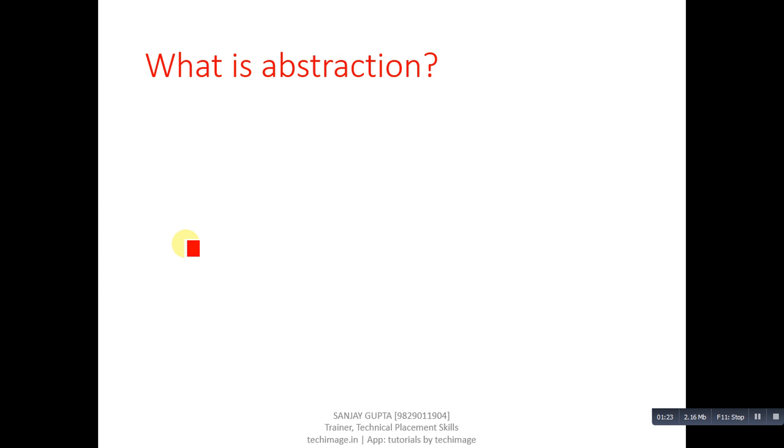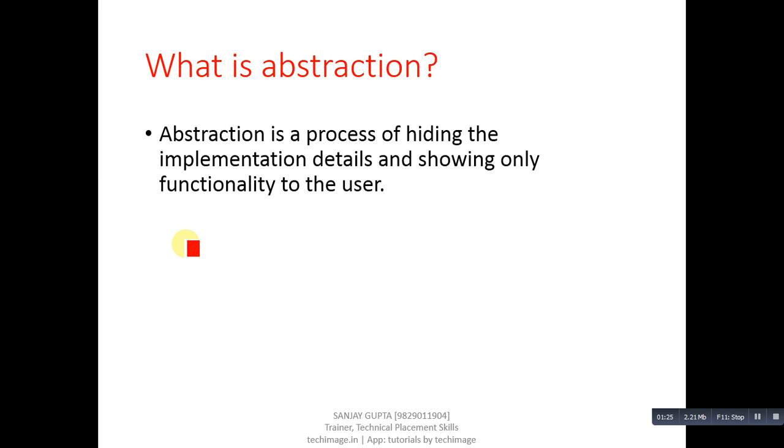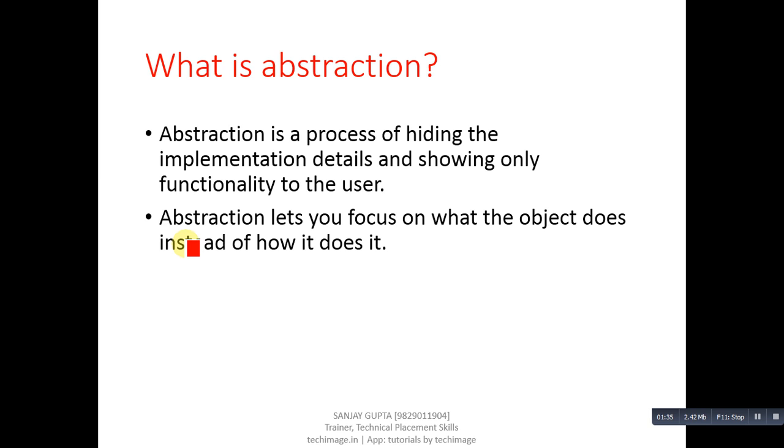Next question, what is abstraction? Answer is abstraction is a process of hiding the implementation details and showing only functionality to the user. Abstraction lets you focus on what the object does instead of how it does it.